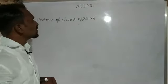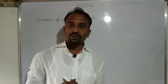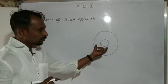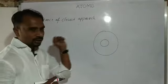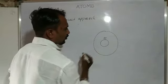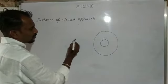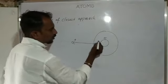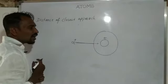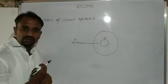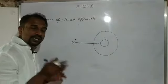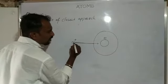The next concept is the distance of closest approach. The nucleus is positively charged and the alpha particle is also positively charged. When the alpha particle moves directly towards the center of the nucleus, there is a repulsive electrostatic force between them. Due to this repulsive force, the velocity of the alpha particle gradually decreases.